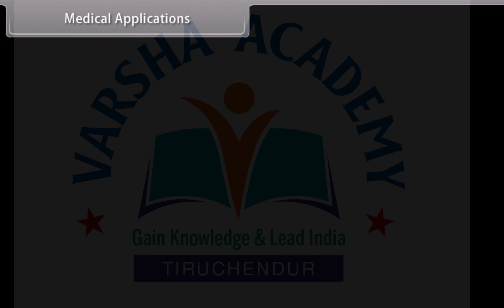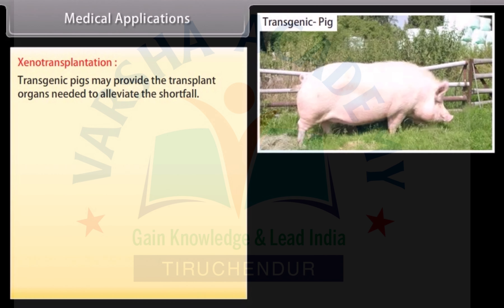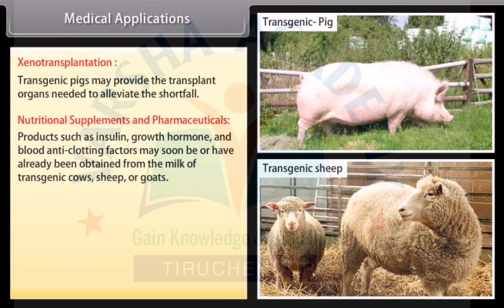Medical applications include xenotransplantation — transgenic pigs may provide the transplant organs needed to alleviate the shortfall. Nutritional supplements and pharmaceuticals: Products such as insulin, growth hormone, and blood anti-clotting factors may soon be, or have already been, obtained from the milk of transgenic cows, sheep, or goats.